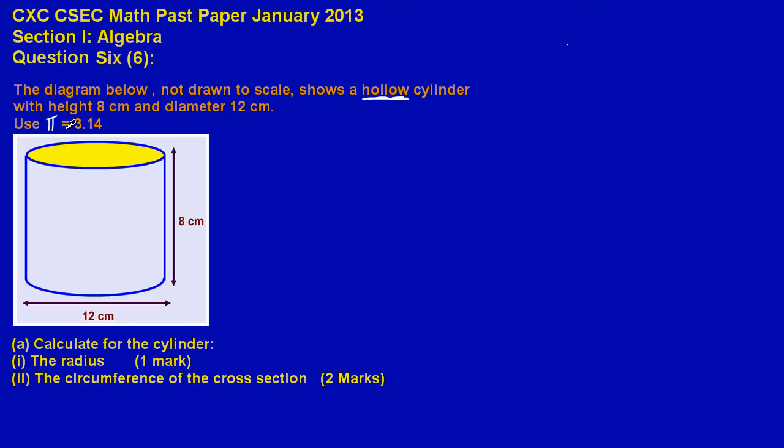Now they're asking us to use pi equals 3.14. Here they gave us the cylinder and here is the height which is the 8cm, this vertical distance there. And the diameter which runs across the base here is the 12cm.